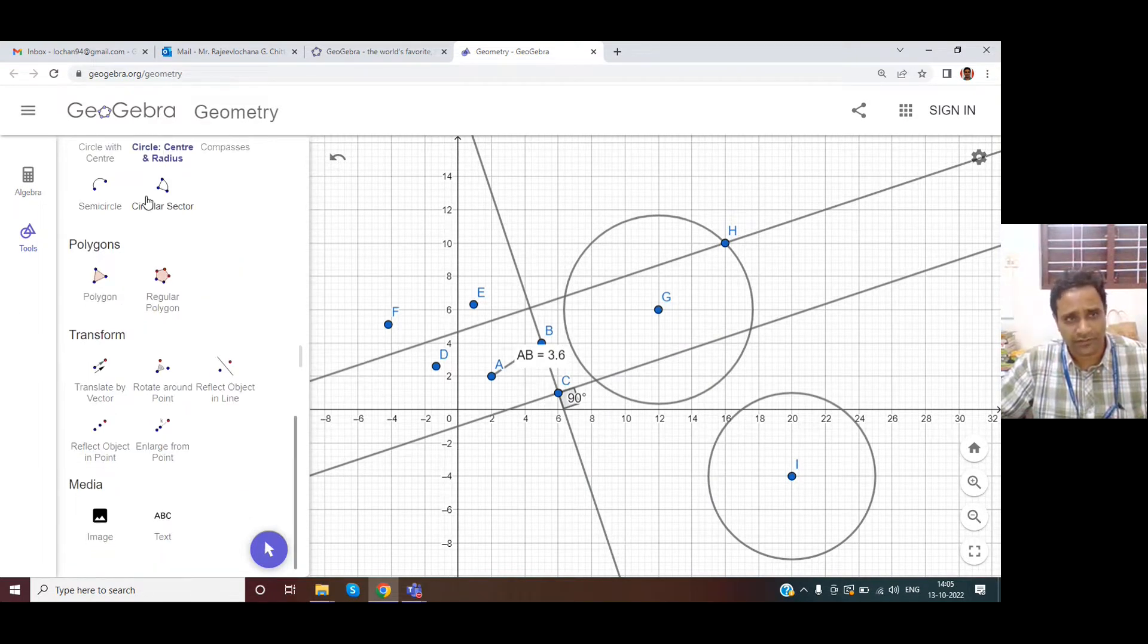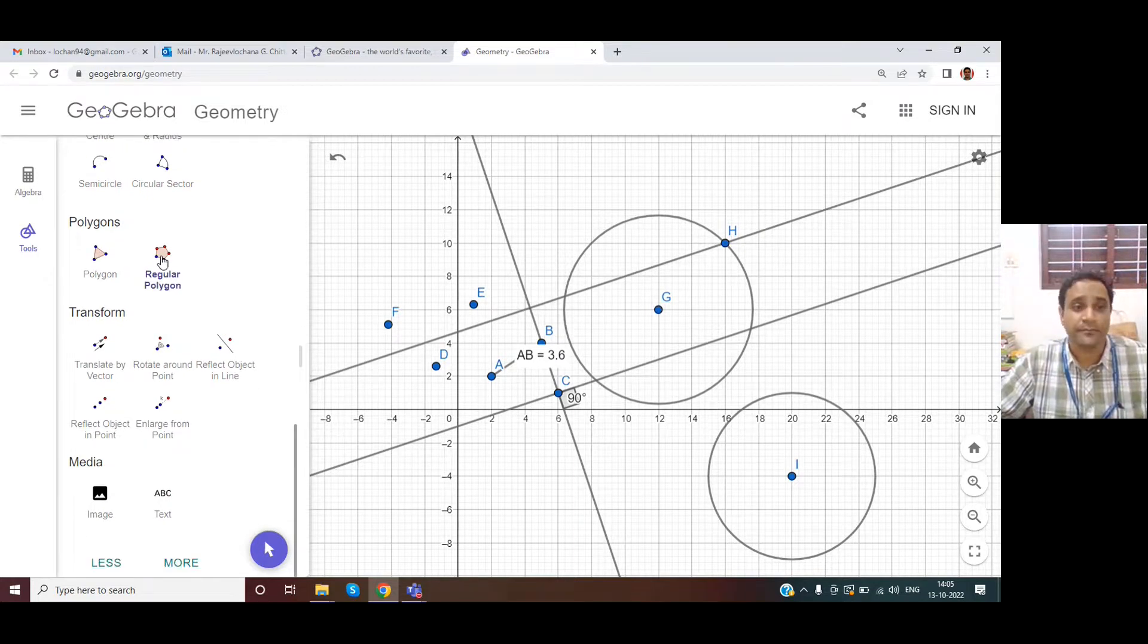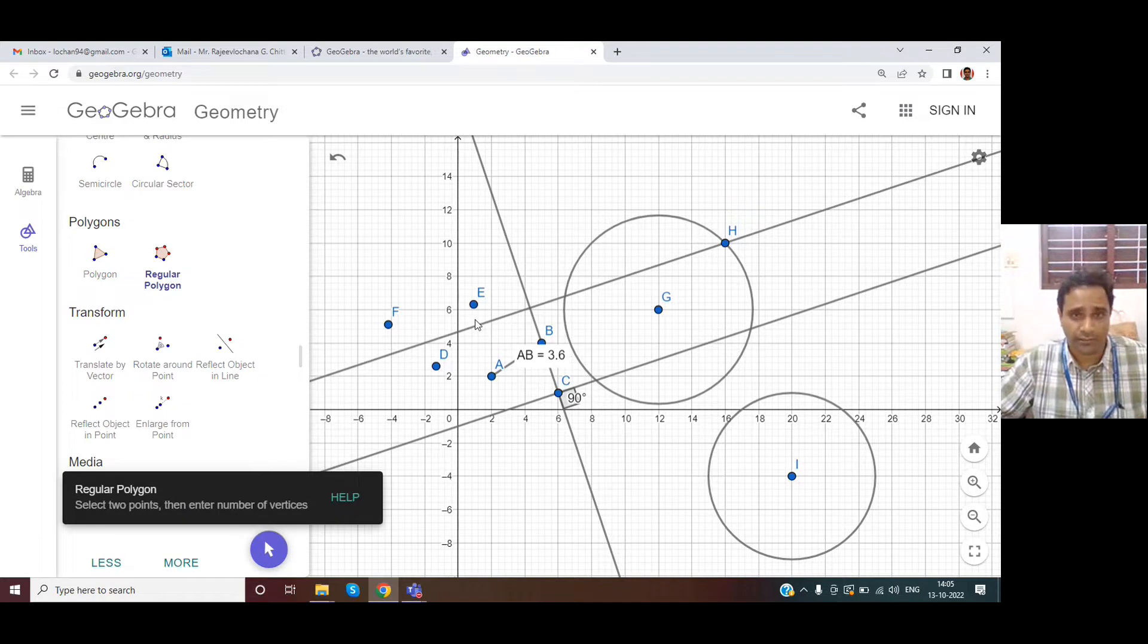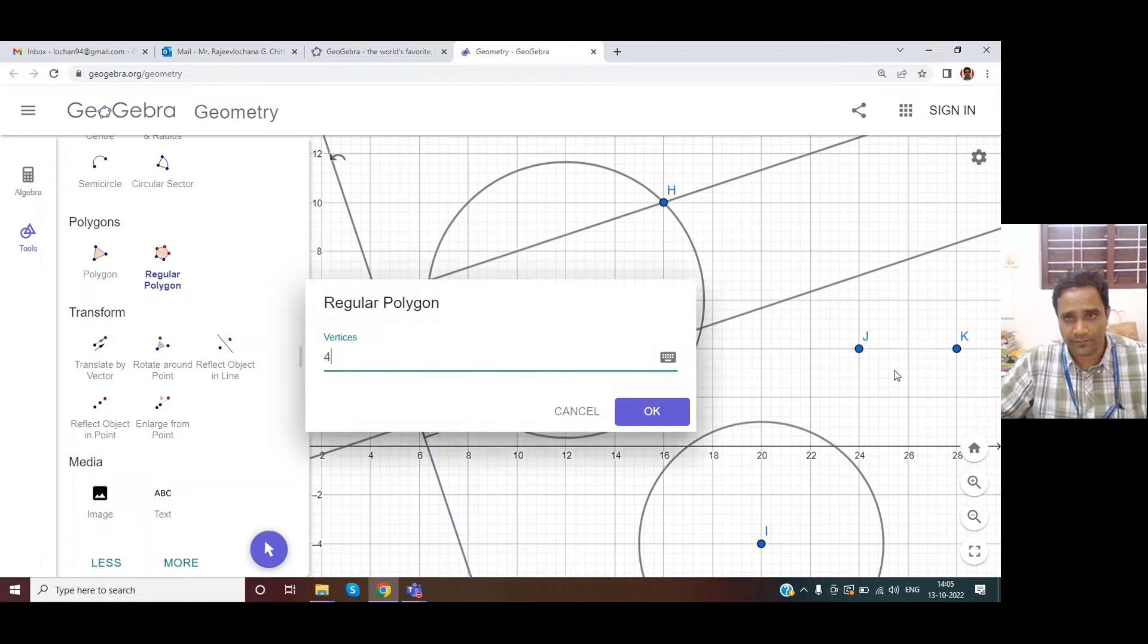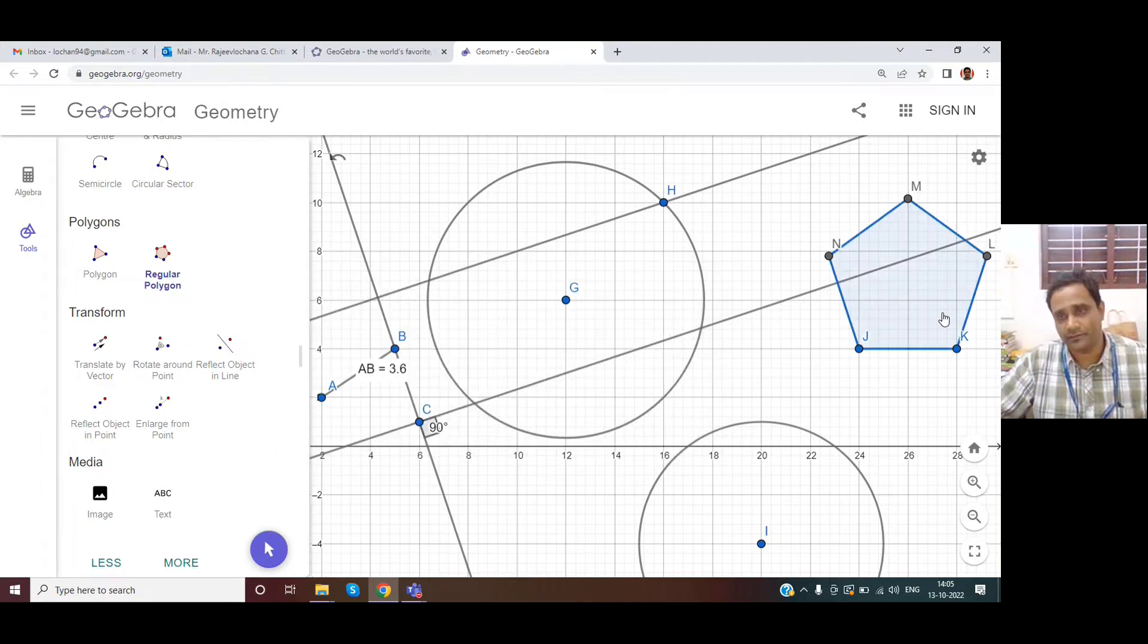Semicircle, circular sector, all those things can be explored. Polygon, regular polygon. Let's see. How many vertices? If we use five vertices we'll get a pentagon.